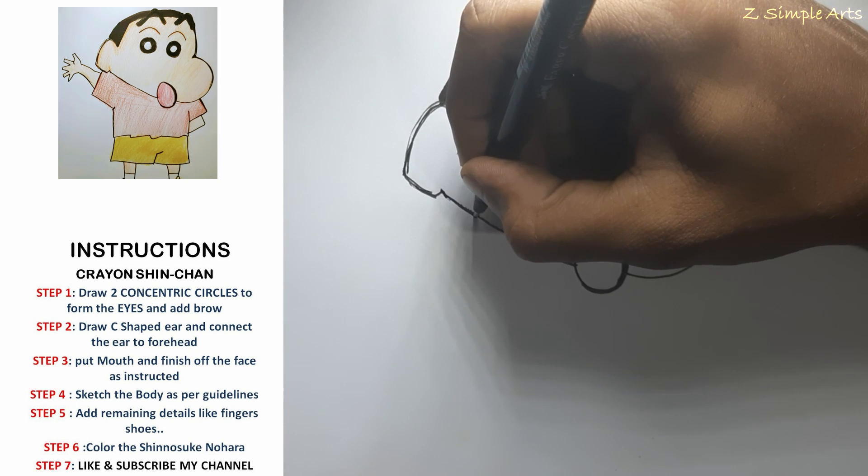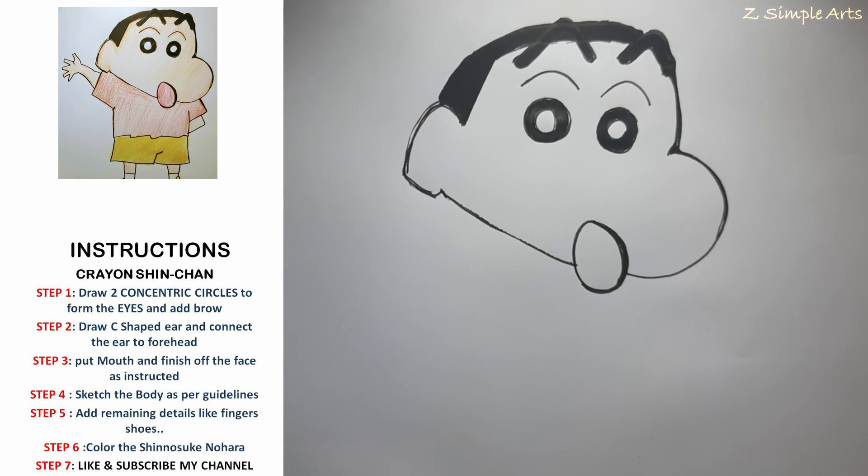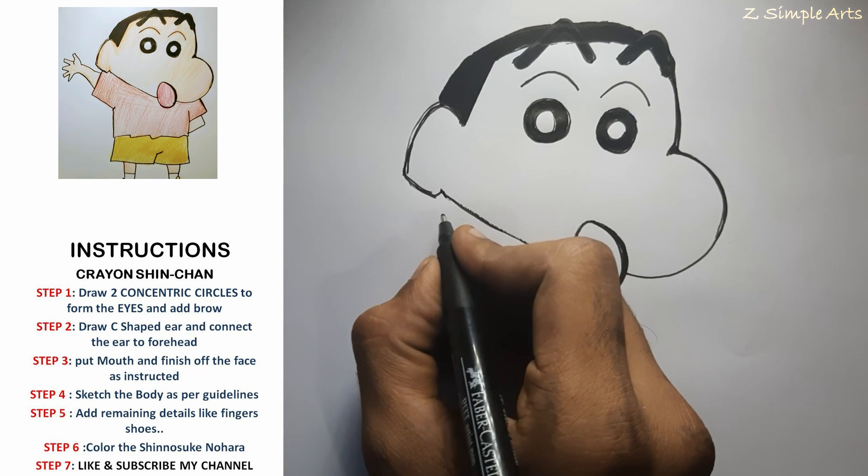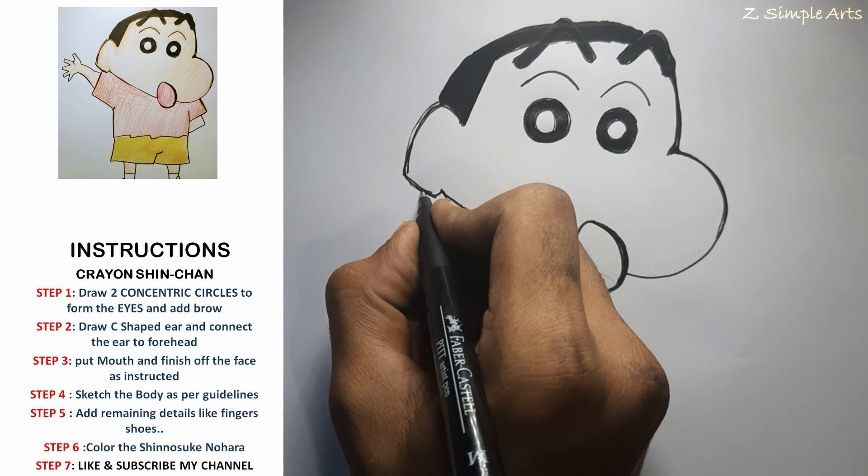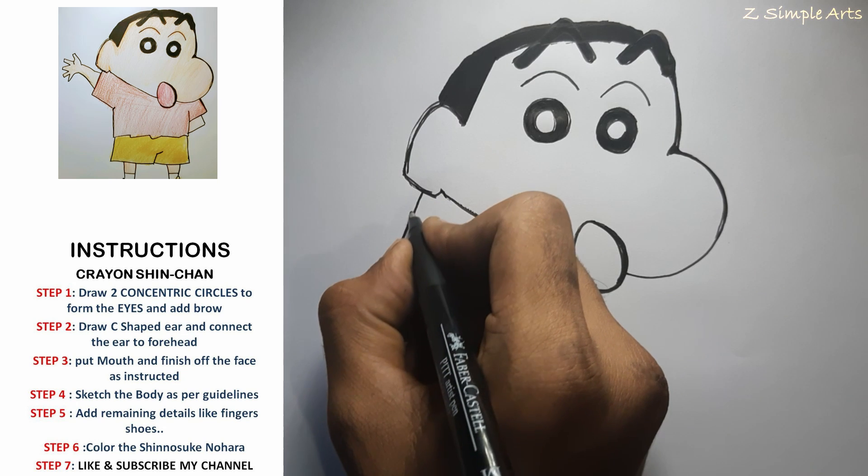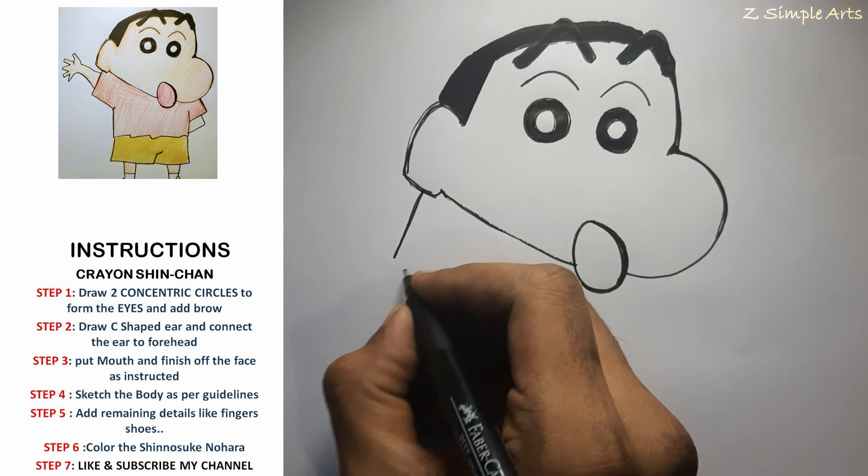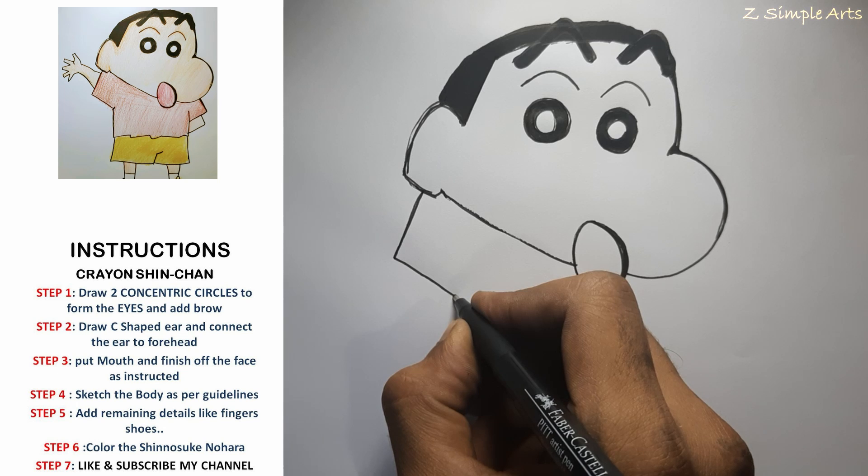Next step is the body. Simple, right below the ear draw a straight line and perpendicular to it another line.